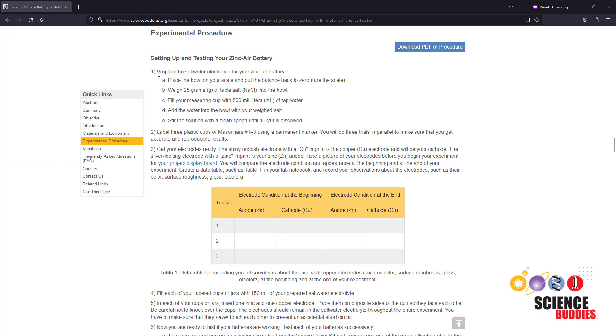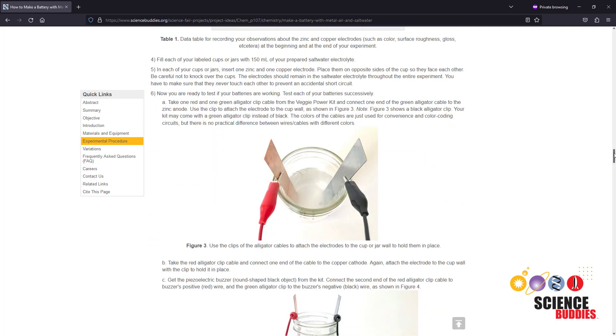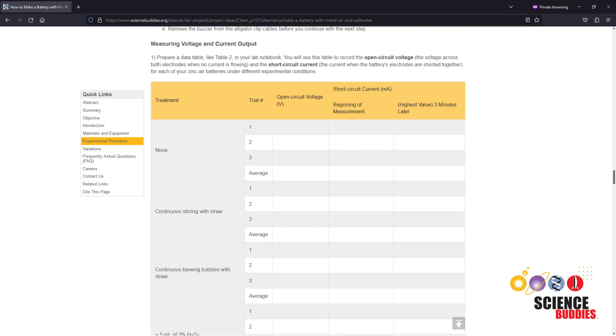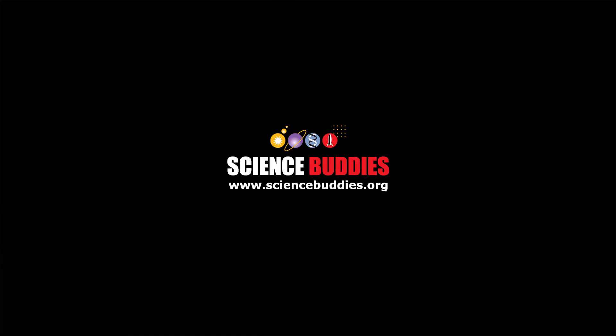For complete written instructions for this project, including a material list, step-by-step procedure, how to do multiple trials, and analyze the data, see the link to the written instructions in the description of this video. For over a thousand other fun, hands-on science and engineering projects, visit us online at www.sciencebuddies.org.